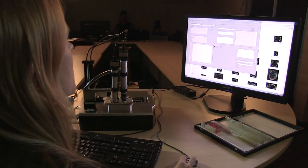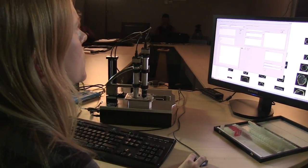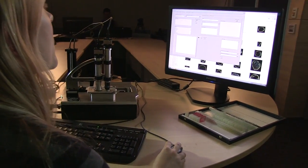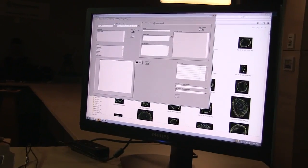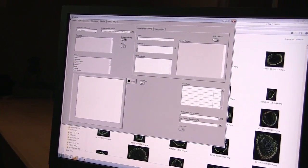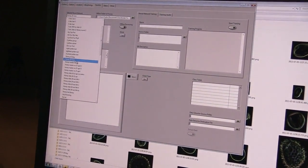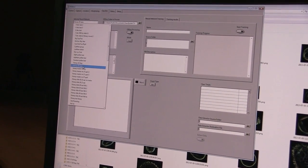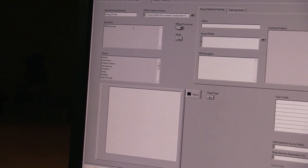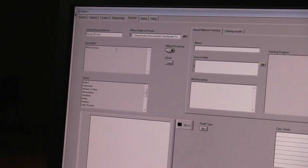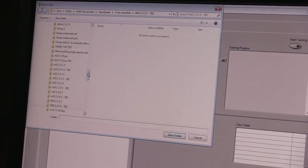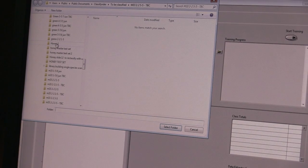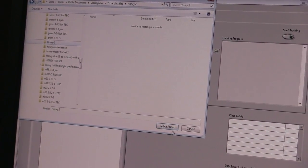So to classify those images shown in the previous folder, the system employs a neural network classification system by which the folder of images is given to the neural network which then compares it with images in library files of known pollen types. And so it's a simple process of selecting your prepared neural network from the list and then selecting the suitable folder of images that we looked at previously and then setting it going.